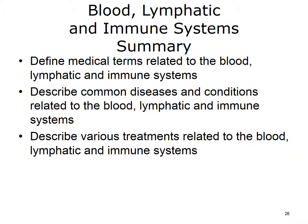This concludes Blood, Lymphatic, and Immune Systems. In summary, we have discussed medical terms related to the blood, lymphatic, and immune systems. You should understand the meanings of these terms and be able to pronounce them. You should also be able to describe common diseases and conditions and medical and surgical procedures and medications related to the blood, lymphatic, and immune systems.